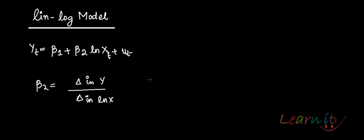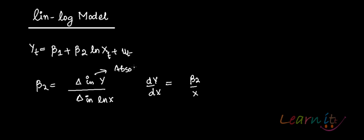And what is basically dy by dx is beta 2 upon x. This is the absolute change in y.